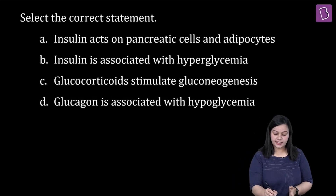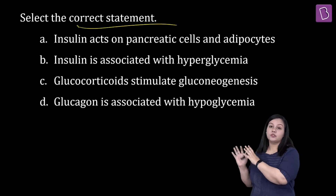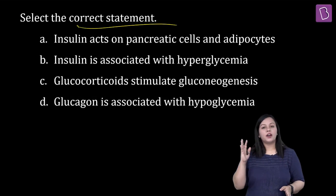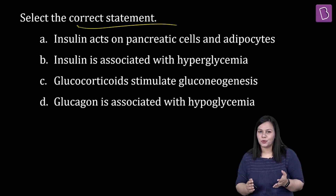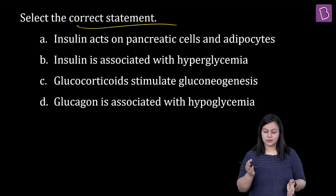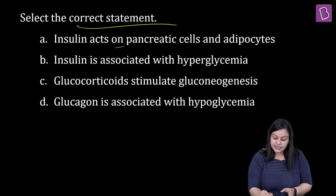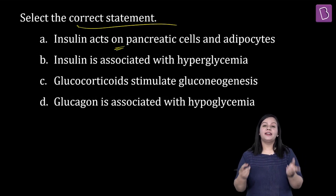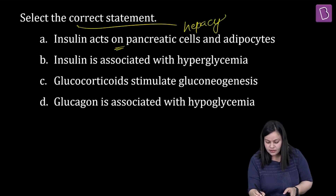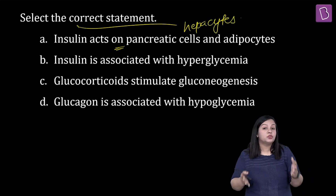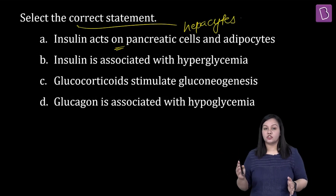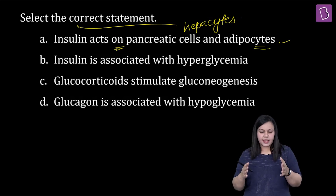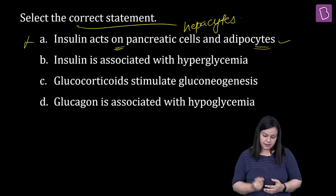Let us have a look at this question. Select the correct statement. Yahan aapko glucose metabolism se associated kuchh statements diye gaye hain — choose the correct one out of four options. First says insulin acts on pancreatic cells and adipose tissues. Straight forward problem — it doesn't really act on the pancreatic cells, it is synthesized by the pancreatic cells, and it acts on the hepatocytes majorly. It allows almost two-thirds of the body cells to take up glucose from the blood. The adipose tissue part is correct, but it does not act on pancreatic cells — isliye yeh pura statement incorrect mark karna padega.